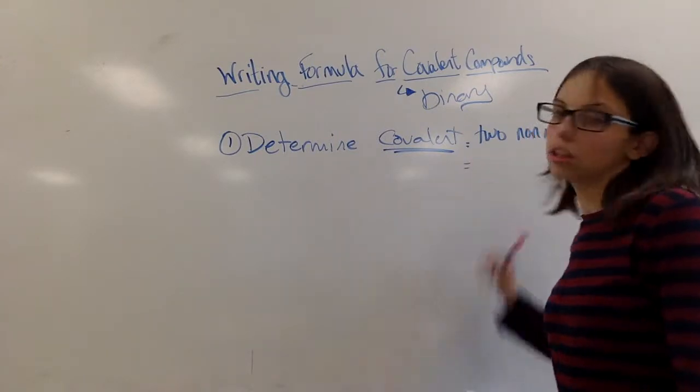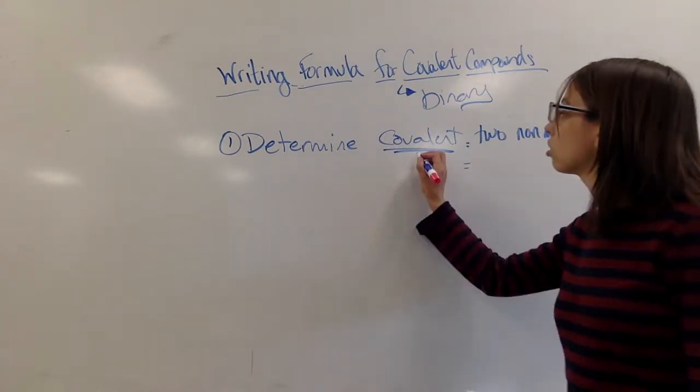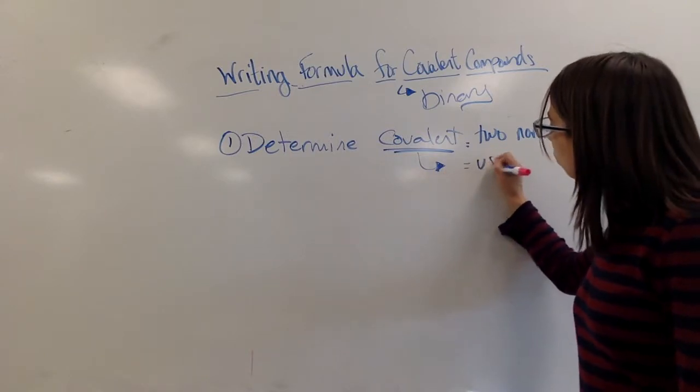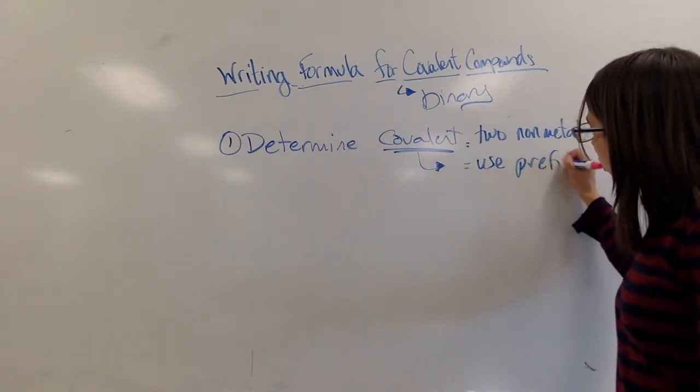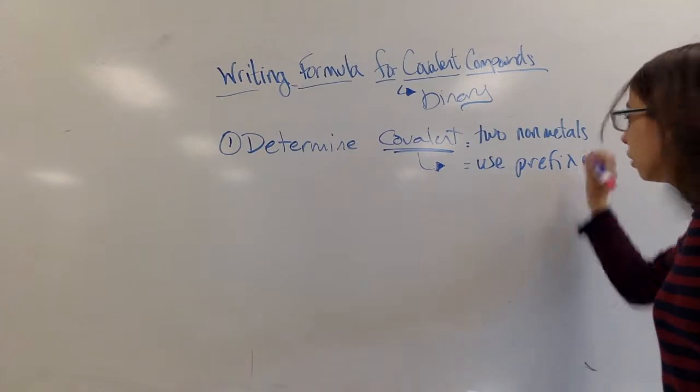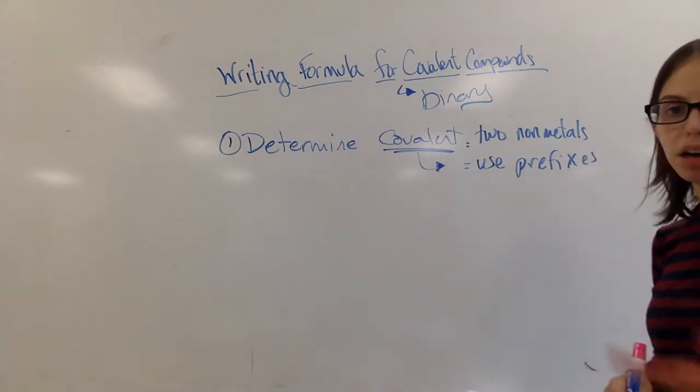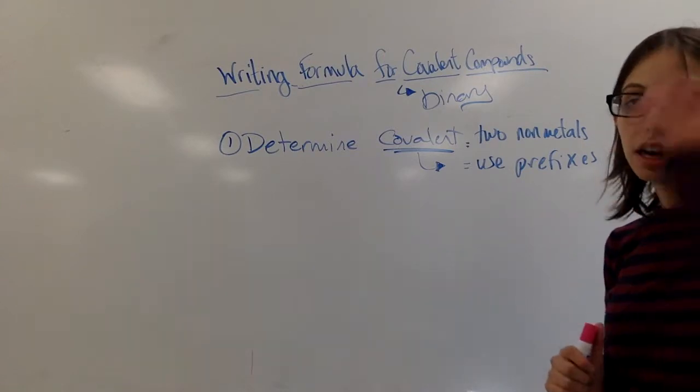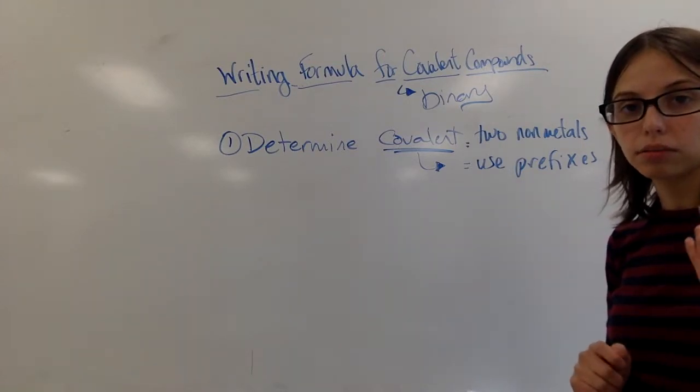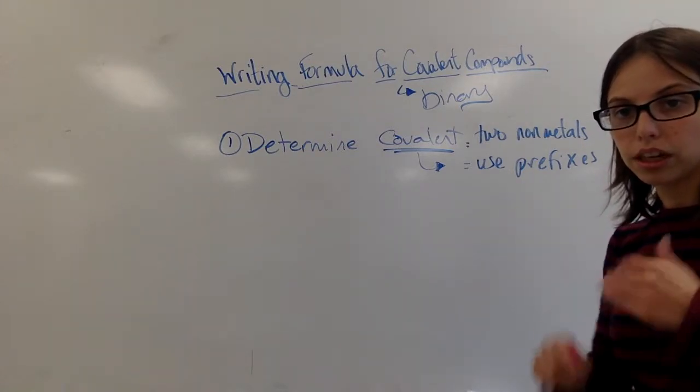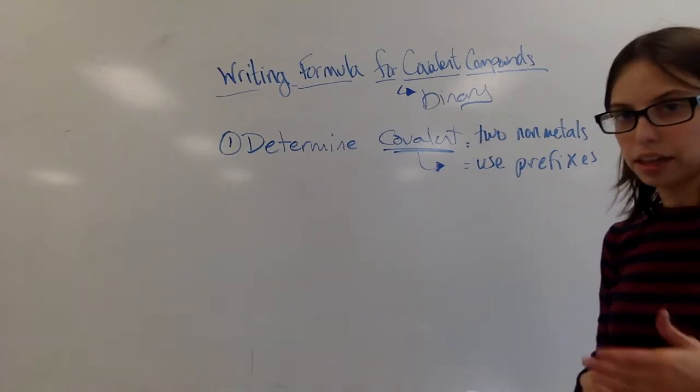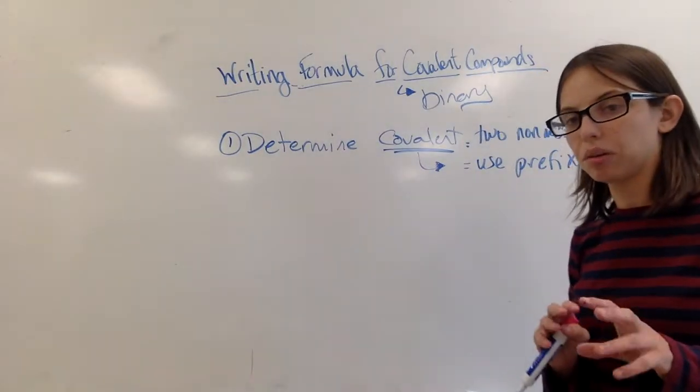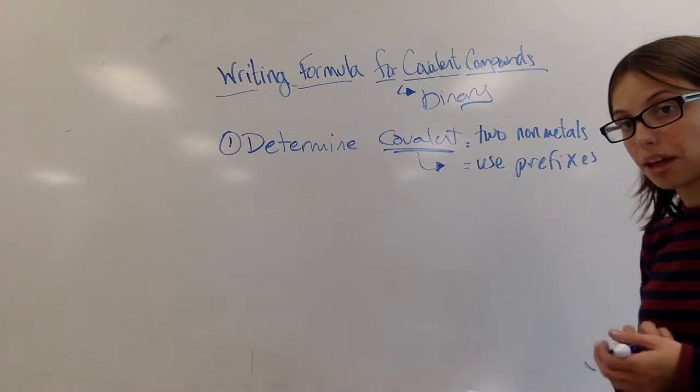Another trick, if you're looking at something that is covalently bonded, the name will use the Greek prefixes that we talked about in the other video. So di, mono, and tri, and tetra, et cetera, based on how many numbers. For ionic names, or for ionic, the ionic name wouldn't have that. It doesn't have any numbers associated with it because we can use that other method.